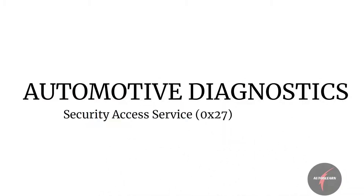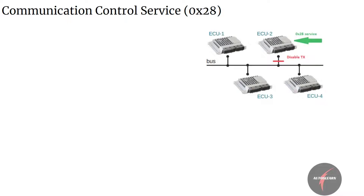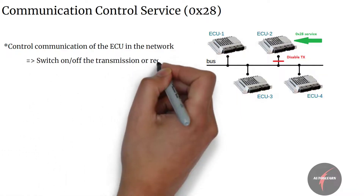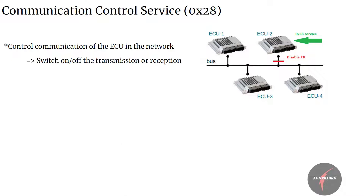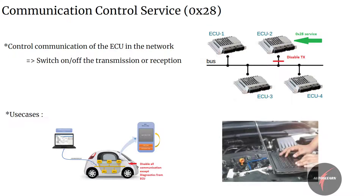In the last video we had a look into details of security access service 27. Let's have a look into the next diagnostic service, that's communication control service 28. Before we dive in, let's first understand the purpose of this service. Communication control service, as the name implies, is used to control communication of the ECU in the network. The service is used to switch on or off the transmission or reception of certain messages of the ECU. Typical use cases are in scenarios where the ECU is getting programmed with a new software — usually the transmission and reception of the ECU is disconnected before the pre-programming starts. Also at workstations or garages where the ECU is investigated for an issue, the service is used to ensure isolation of the ECU from the network.